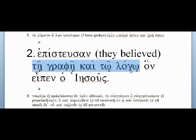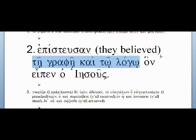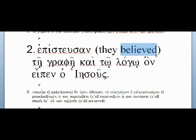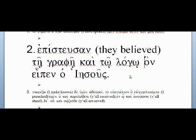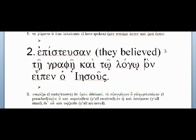The difference this makes for translation is that the correct rendering of these objects is 'they believed the scripture and the word' — not 'they believed in the scripture and in the word.' Those nouns follow a verb of cognition, so they are in the dative because they are what are called the dative of direct object. They're functioning as the direct object even though they're in the dative. Hopefully that makes sense; let me know if you need me to walk through it another way.